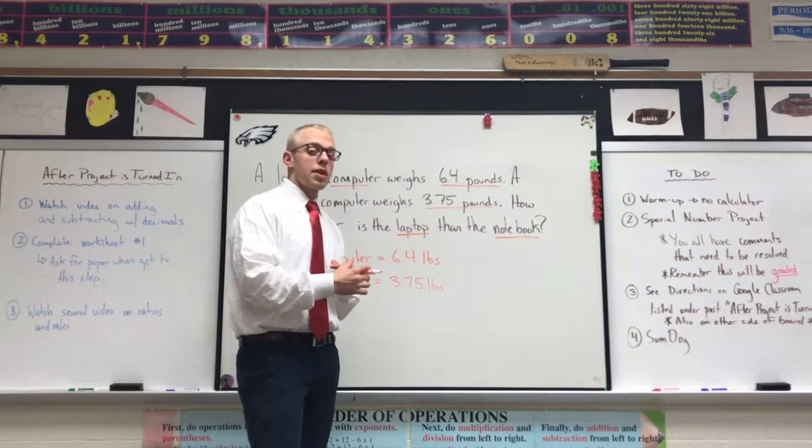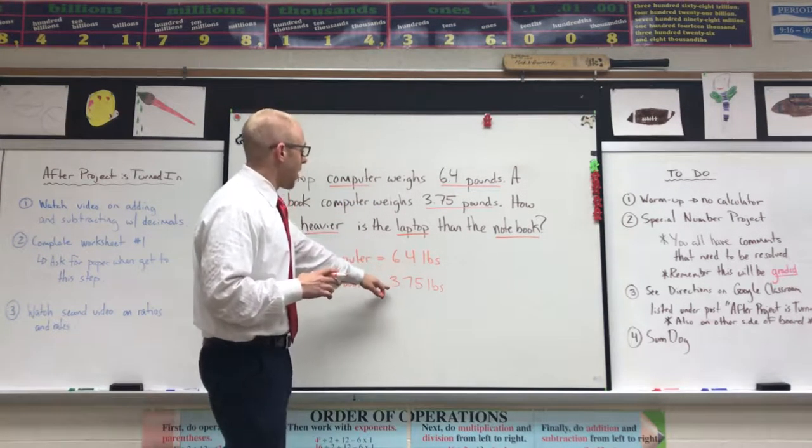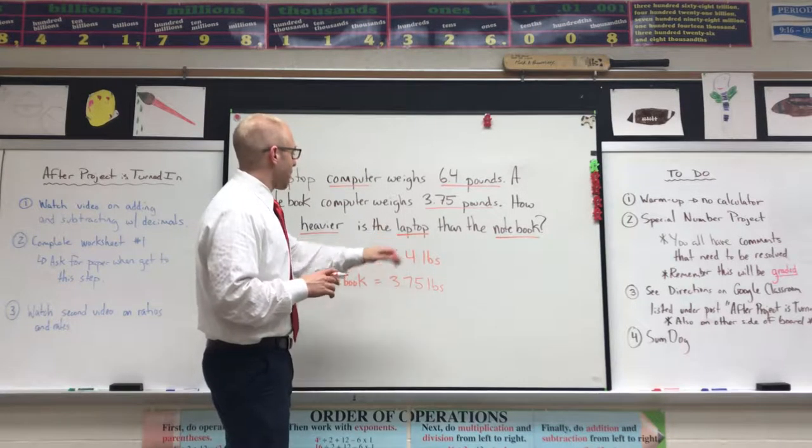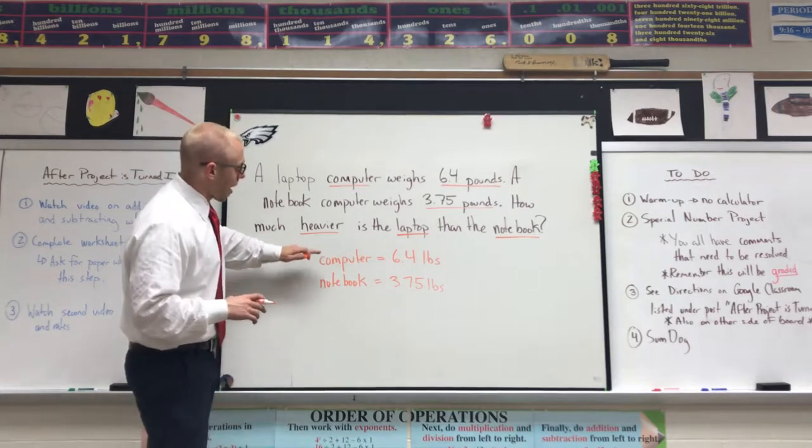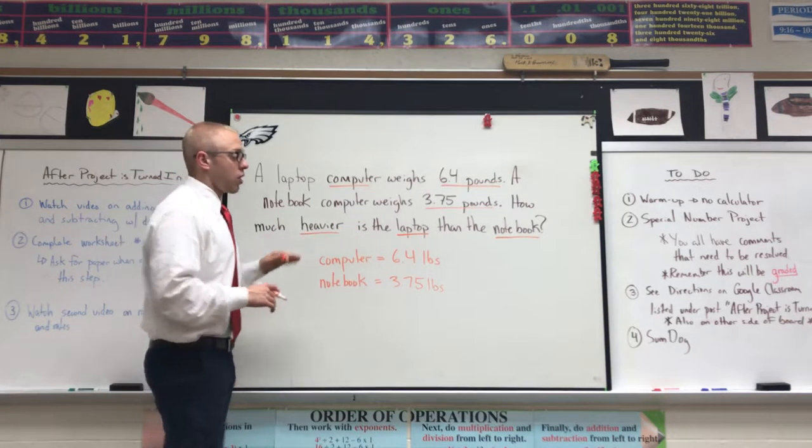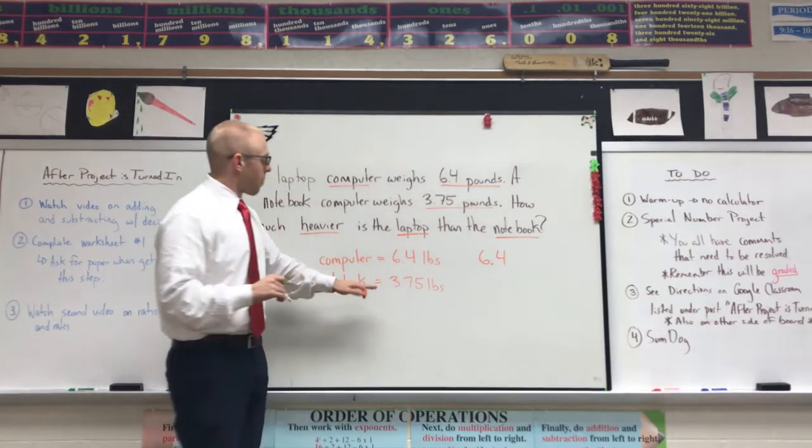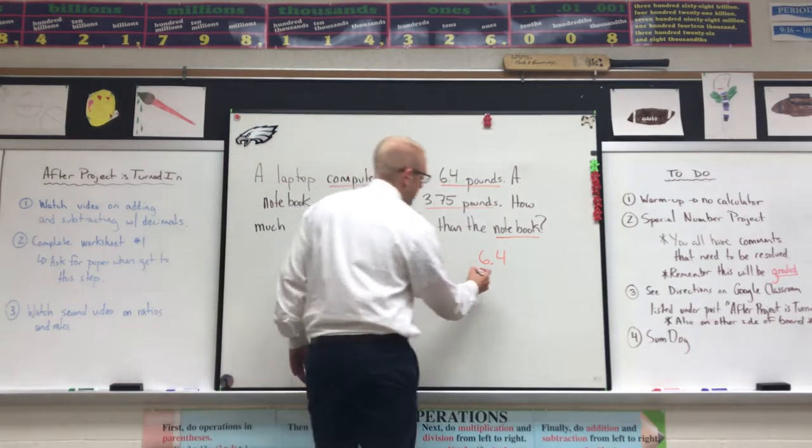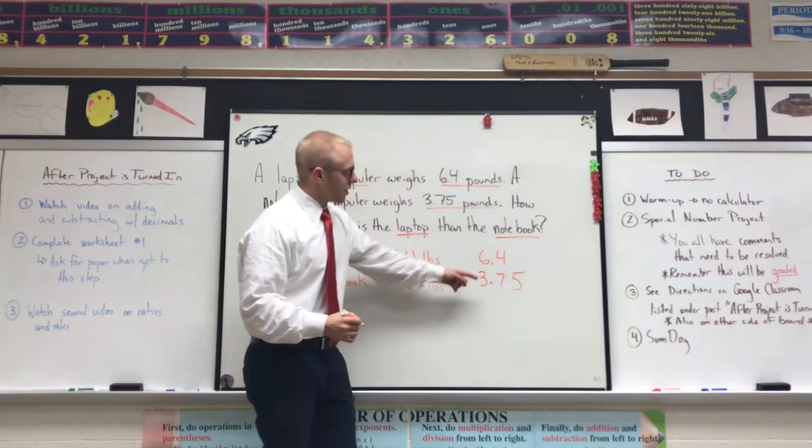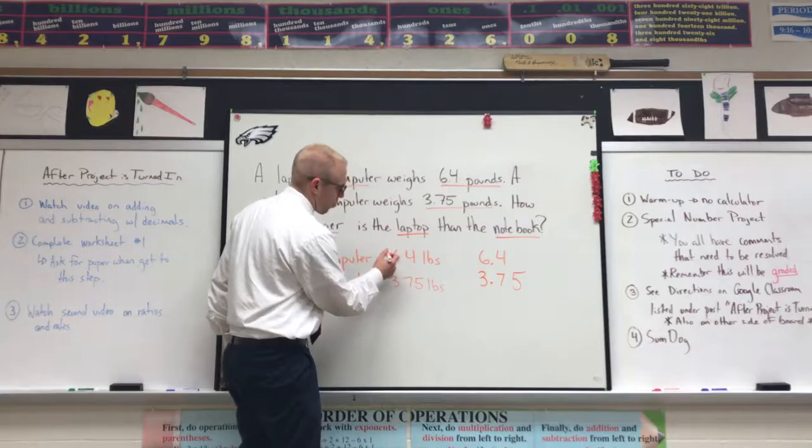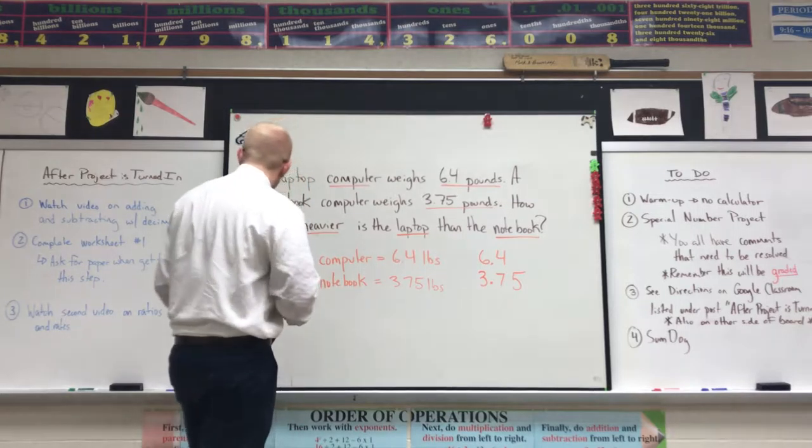So remember those other two videos we talked about—lining up our decimal points, making sure our place values match. We're gonna do the same thing here. Here's my two values. I know that I'm comparing my laptop computer to the notebook computer. My laptop computer weighs more, so that is my larger value—I am going to put that on top. My notebook, my smaller value, that's gonna go on the bottom: 3.75. Look at this, guys—lined up my decimal points. Here's the ones place, here's the ones place—they're still lined up. I know that I'm ready to go.